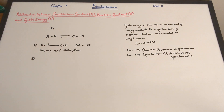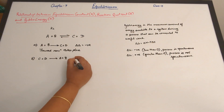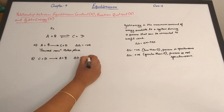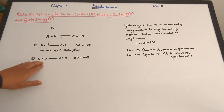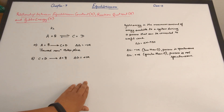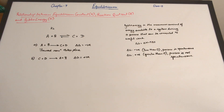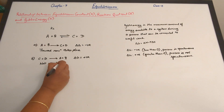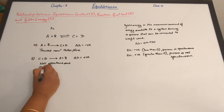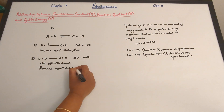Now let's take another case: C plus D gives rise to A plus B. In this case, delta G is positive, and when it's positive the process is not spontaneous. So the reaction C plus D converting to A plus B is not spontaneous. But when you flip the reaction, delta G is going to be negative, meaning the forward reaction will take place. Here, the reverse reaction proceeds.